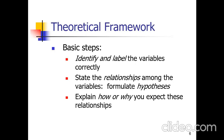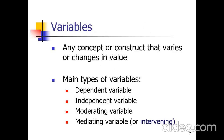A critical framework includes three steps: first, identify and label the variables correctly; second, state the relationships among the variables — for example, there is a positive relationship between salary increase and performance, or a negative relationship between abusive supervision and performance; and third, explain how and why you expect these relationships. A variable is any concept or construct that varies or changes in value. In business research, the main types are independent, dependent, moderating, and mediating or intervening variables.